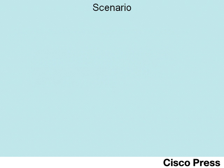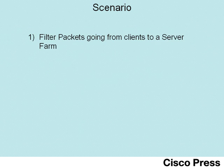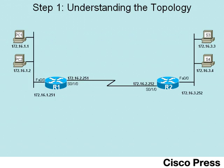To reach these objectives, this scenario uses a single scenario step. In this scenario step, we'll see how to filter packets that are going from clients on the left side of the diagram to a server farm on the right-hand side of the diagram. To begin step one, let's take a look at the network topology and the IP addressing scheme. Notice we have two routers connected by a serial link, with each router having a LAN.